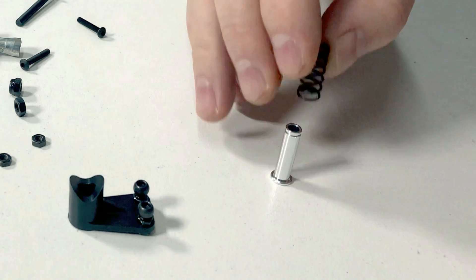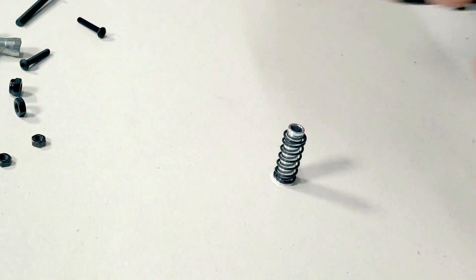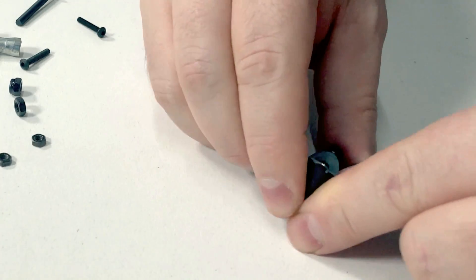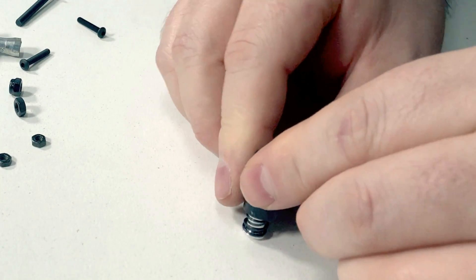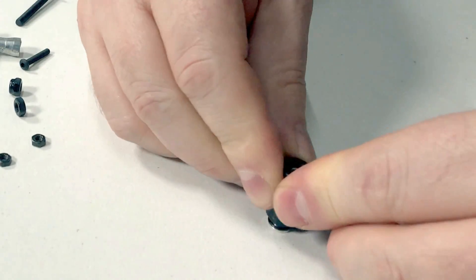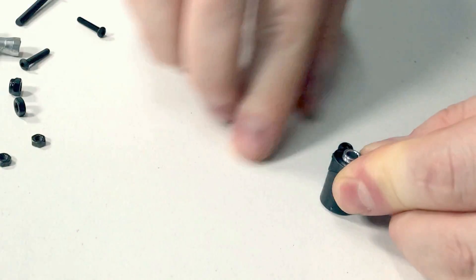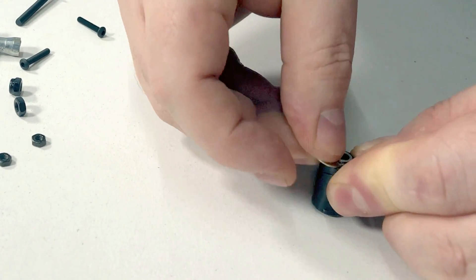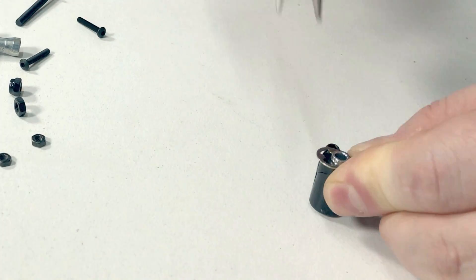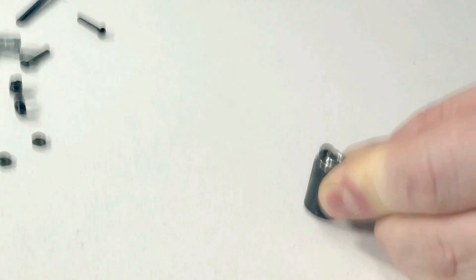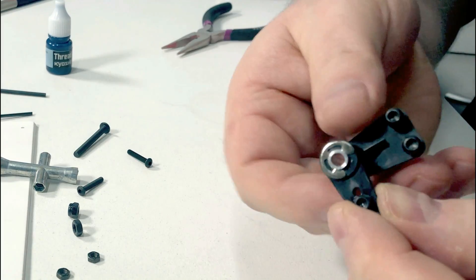Now we can get onto the servo saver. And after doing a few of these I've found the easiest way is probably get your center post and sit it on a flat surface, then grab your spring and put it on. Grab the bottom part of the servo saver and slip that over, then the top part. Push both of those down to compress the spring, then put your e-clip on and snap that on with pliers. Give it a little test, she's good to go.